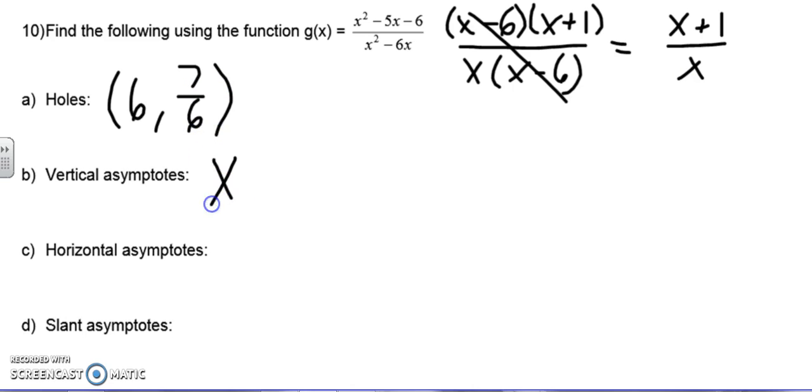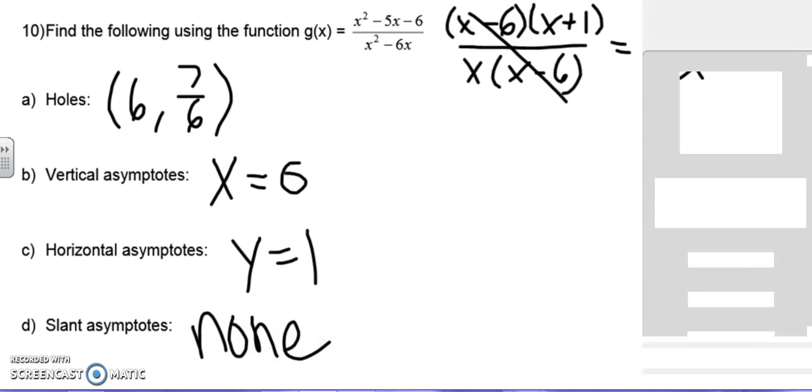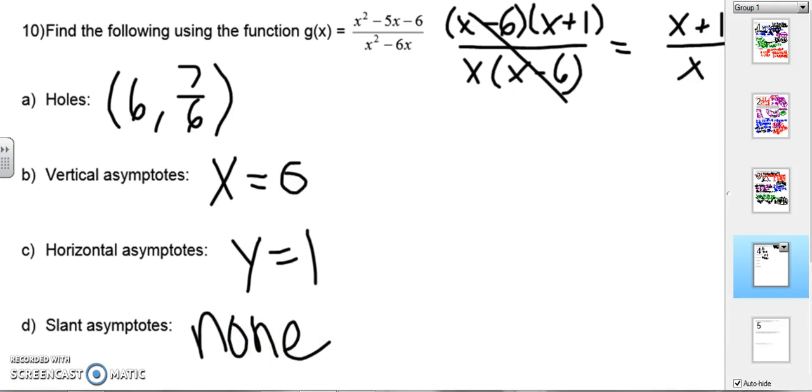Vertical asymptote, what will make the denominator equal to 0? 0. Horizontal asymptote, if I divide the coefficients, I get 1, slant, none. Slant asymptote only happens if the highest power is on the top.